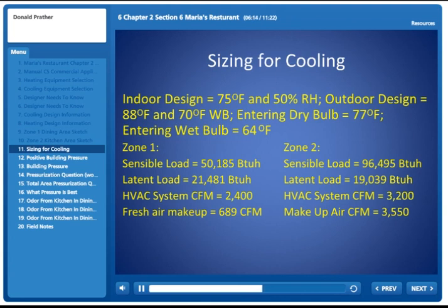Zone 2 is not quite so straightforward. The sensible load is 96,495. The latent load is 19,039. HVAC system CFM is 3,200. The makeup required with all the exhaust hoods and everything is 3,550. Some of them have makeup air built in, so they're interlocked and bring in some air when they come on.